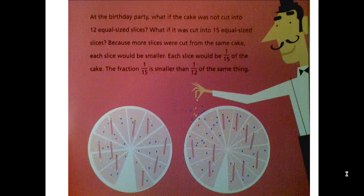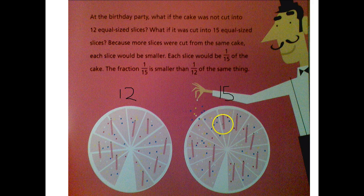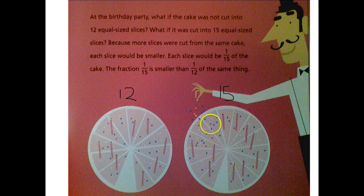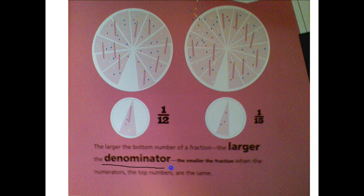At the birthday party, what if the cake was not cut into twelve equal-sized slices? What if it was cut into fifteen equal-sized slices? Because more slices were cut from the same cake, each slice would be smaller. When we cut it into fifteen, you can see the pieces got smaller. So one-fifteenth is smaller than one-twelfth of the same size cake. The larger the denominator, the smaller the piece. The larger the bottom number of a fraction, the larger the denominator, the smaller the fraction when the numerators are the same.